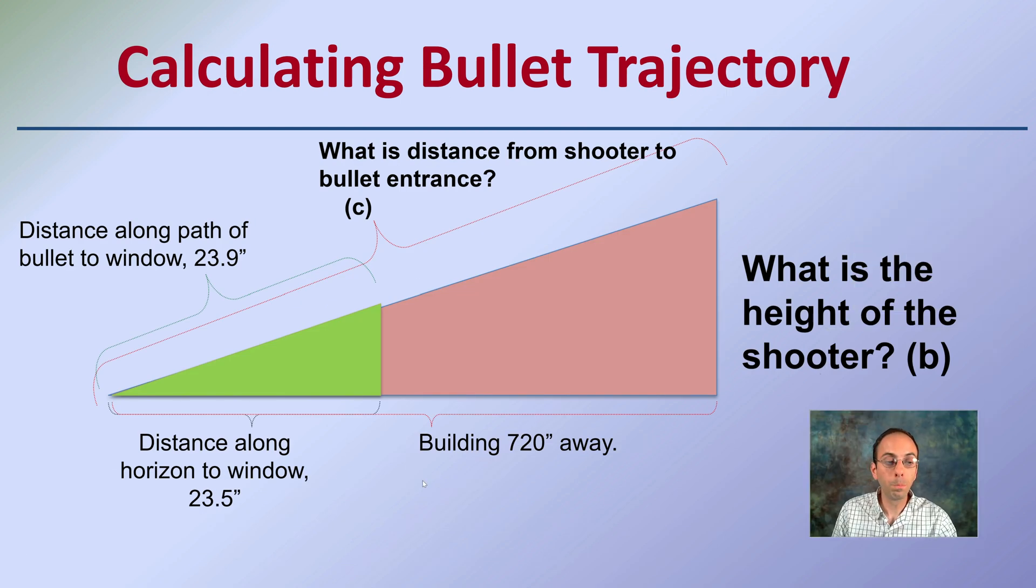What we know is the distance along the horizontal to the window was 23.5 inches. We have the distance along the path of the bullet window was 23.9 inches. This makes this little right triangle. We know the building is 720 inches away, and the distance was converted to inches to keep all the units the same.